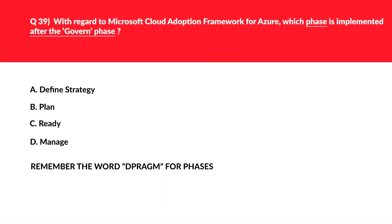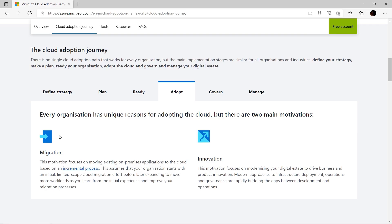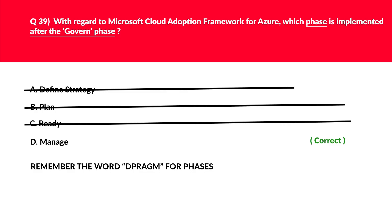This question is a quick refresher from part 1 of this series — we covered a similar question there. Looking at the word 'DIAPHRAGM,' the question asks about what comes after the Govern phase, represented by the letter G. After G, the letter M comes, and M stands for Manage. The official documentation arranges these phases in ascending order, with Manage as the last phase. Since the question asked about what follows Govern, Manage is the correct answer and we'll log D.